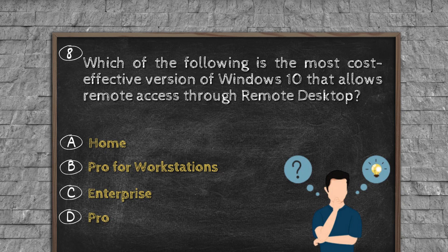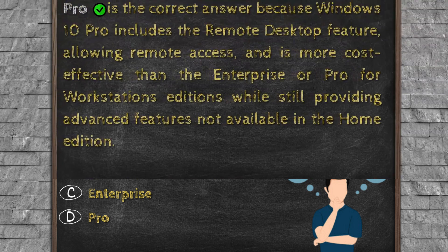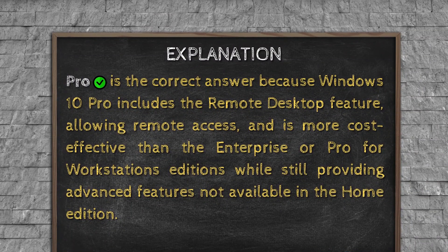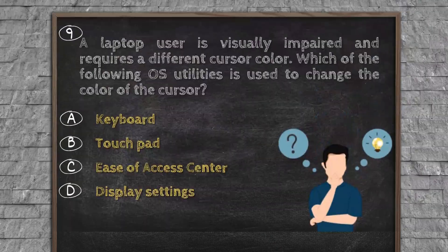Question number eight. Which of the following is the most cost-effective version of Windows 10 that allows remote access through Remote Desktop? Option A, Home. Option B, Pro for Workstations. Option C, Enterprise. Option D, Pro. Explanation. Pro is the correct answer because Windows 10 Pro includes the Remote Desktop feature, allowing remote access, and is more cost-effective than the Enterprise or Pro for Workstations editions, while still providing advanced features not available in the Home edition.